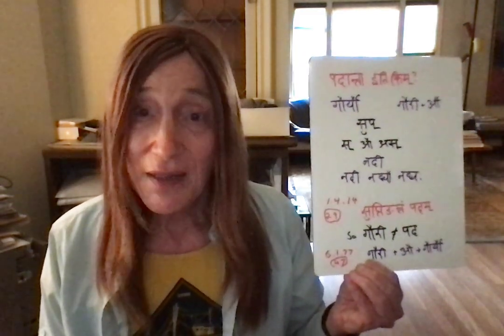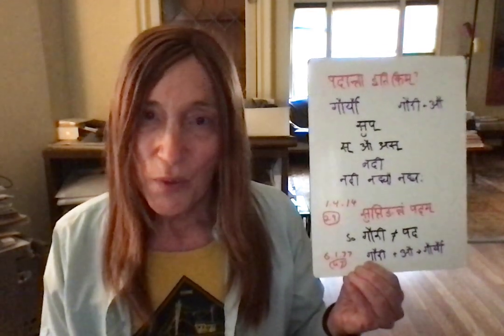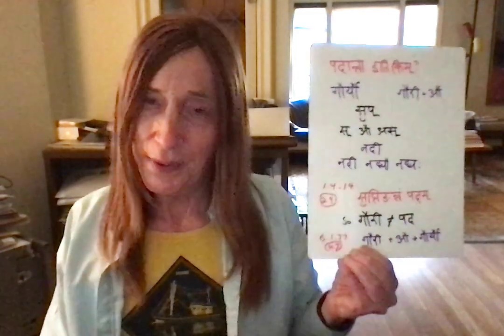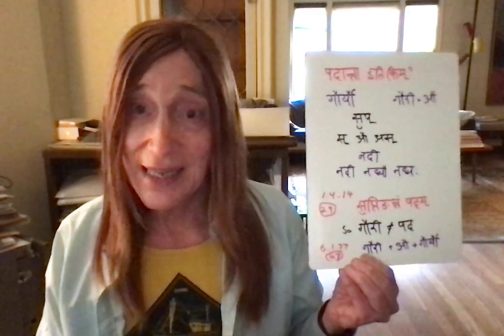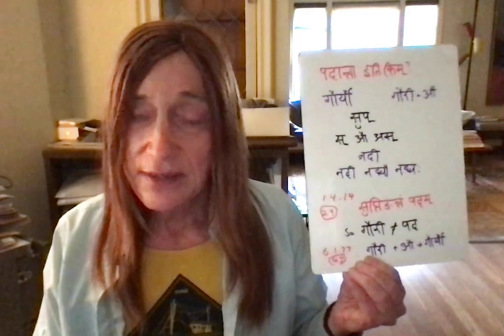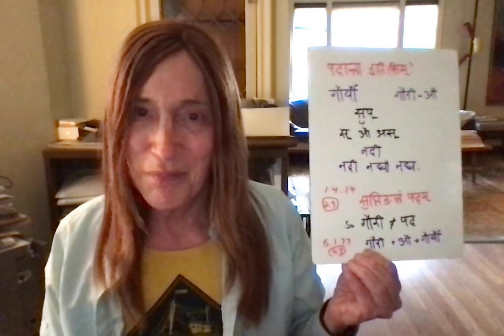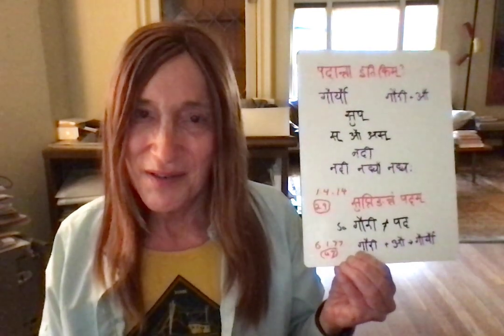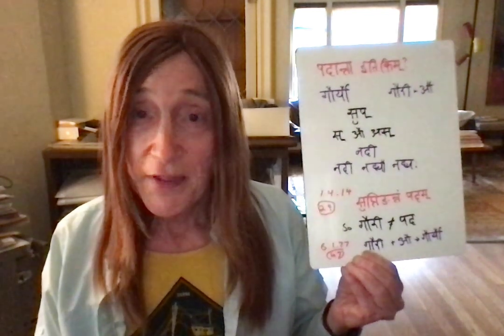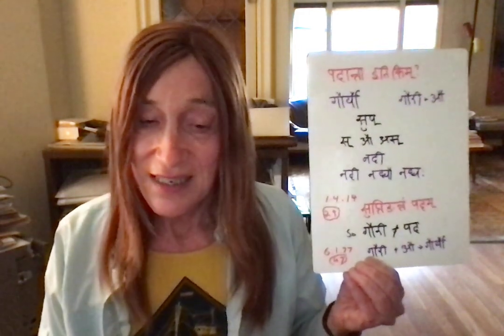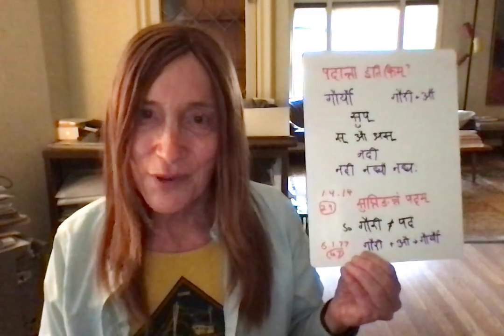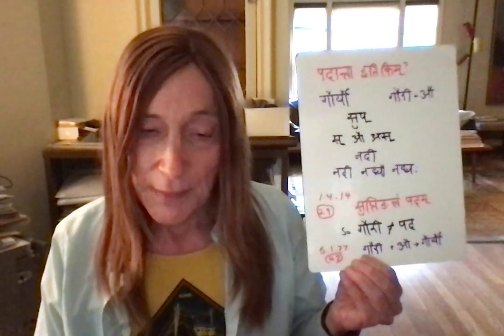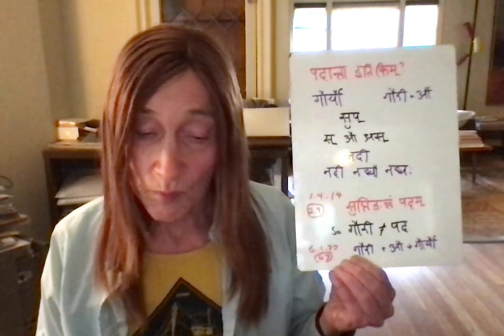The answer goes back to 1-4-14 and 29 in Siddhanta Kaumudi: suptingantam padam — a pada is one that ends with a sup or ting. Gauri does not end with a sup because we are in the process of trying to add a sup onto it — it is the root. So it is not a pada; therefore the e of gauri is not padanta; therefore there is no optional prakritya, no optional staying as it is. We must invoke ikho yanachi and get gauri am.